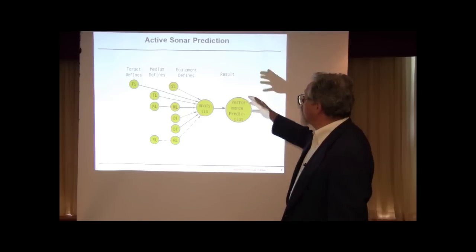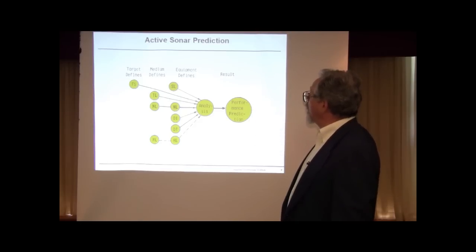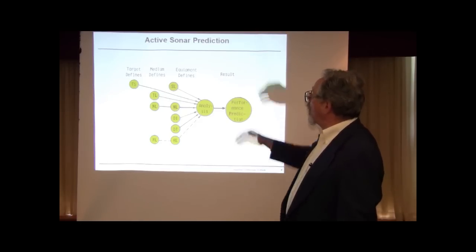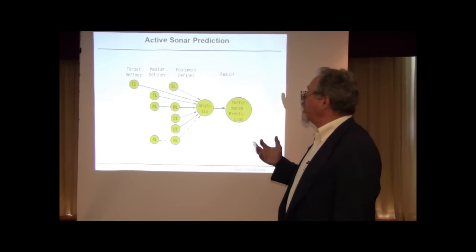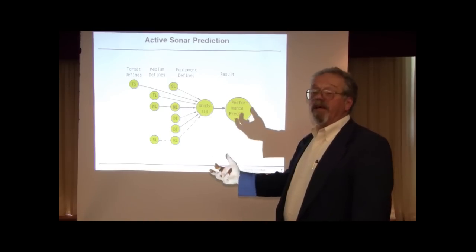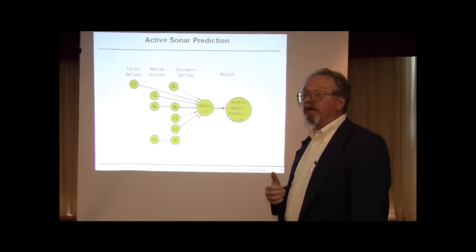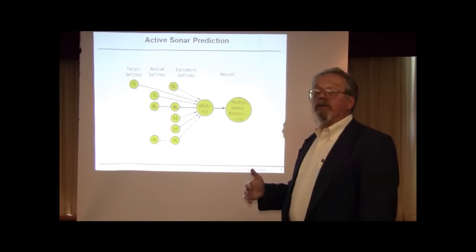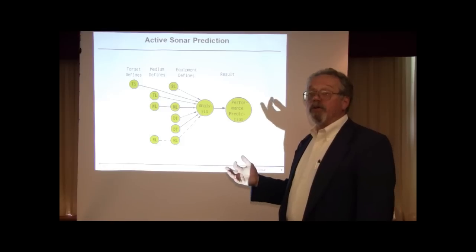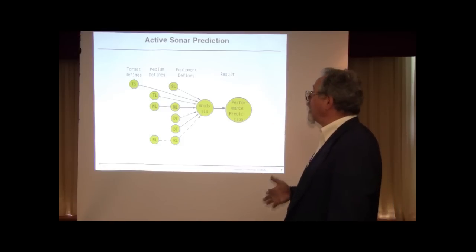So this is the sonar equation shown differently of which parts the target defines. So you as a designer have no control over the target strength of, let's say, the submarine, and in fact the submarine is going to do things to minimize its target strength by putting coatings on, changing the aspect when it can to the sonar to minimize the target strength.